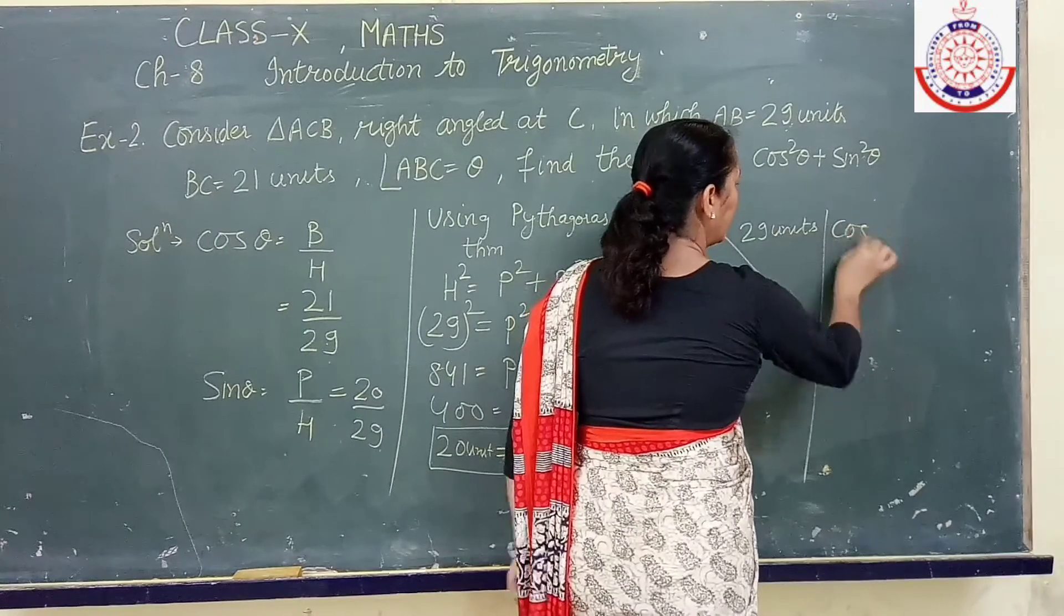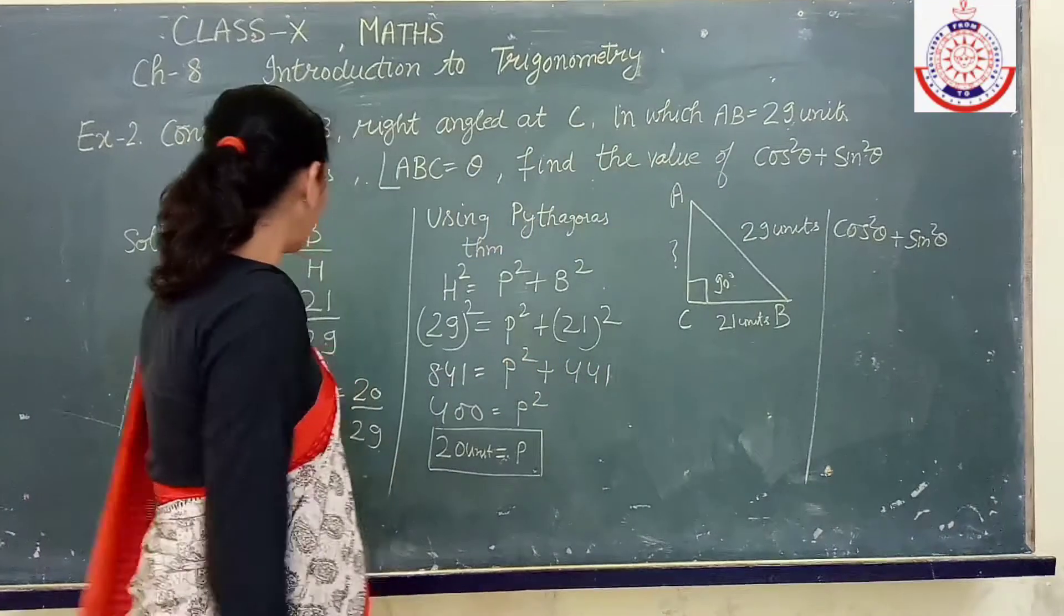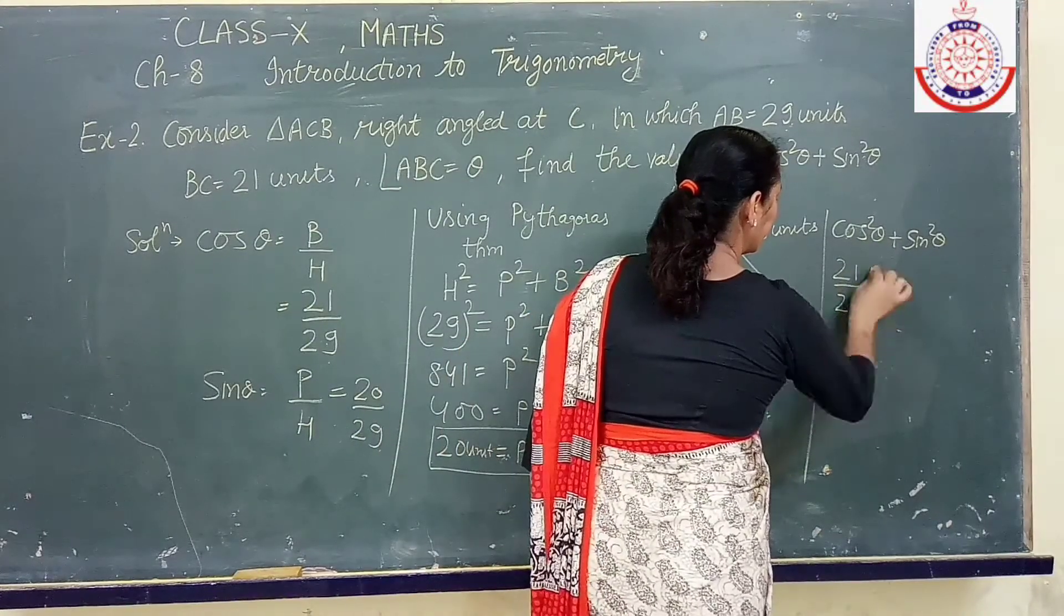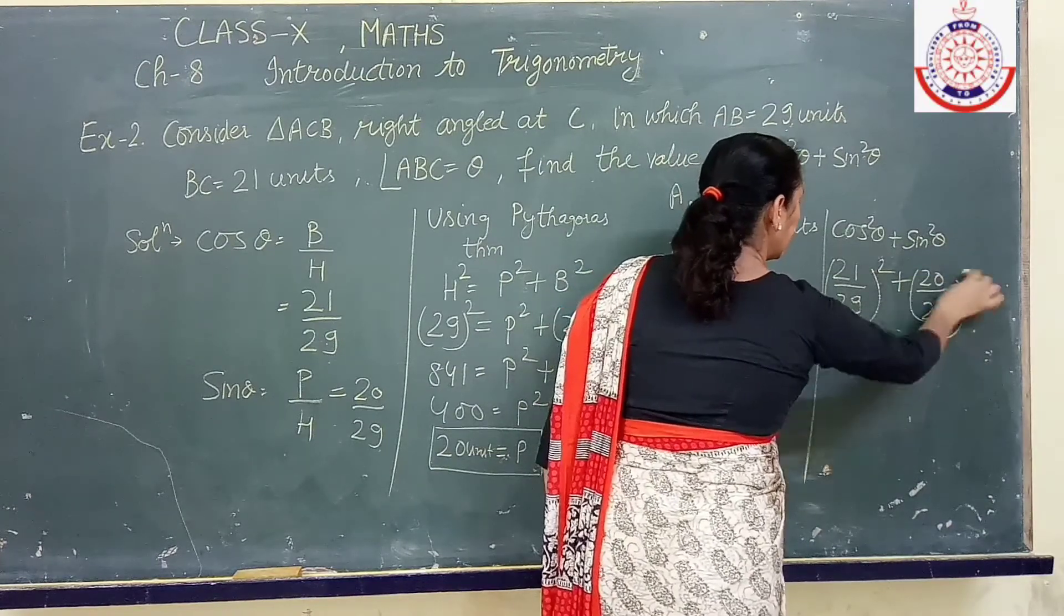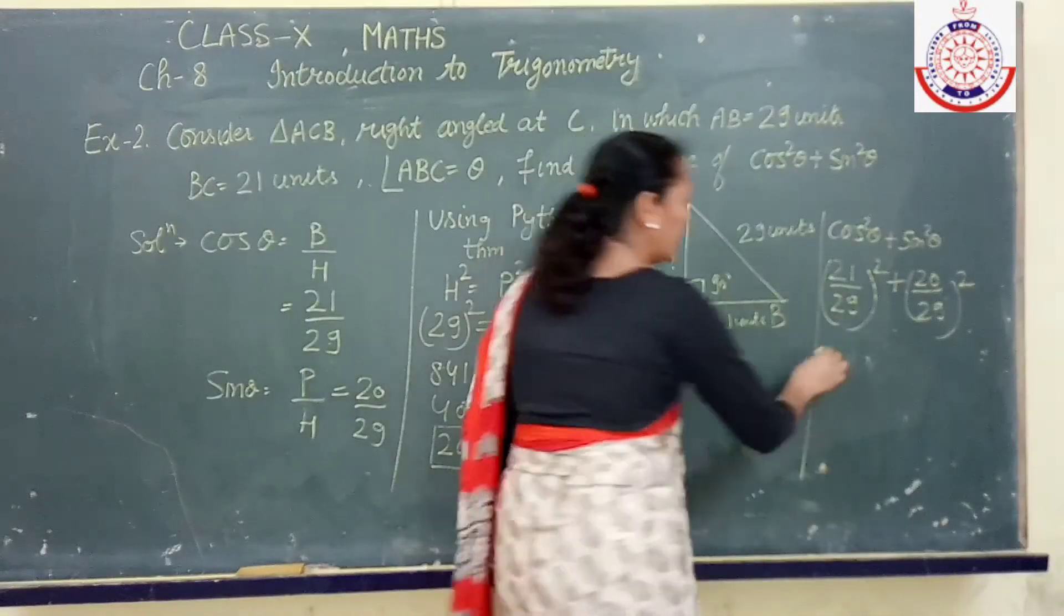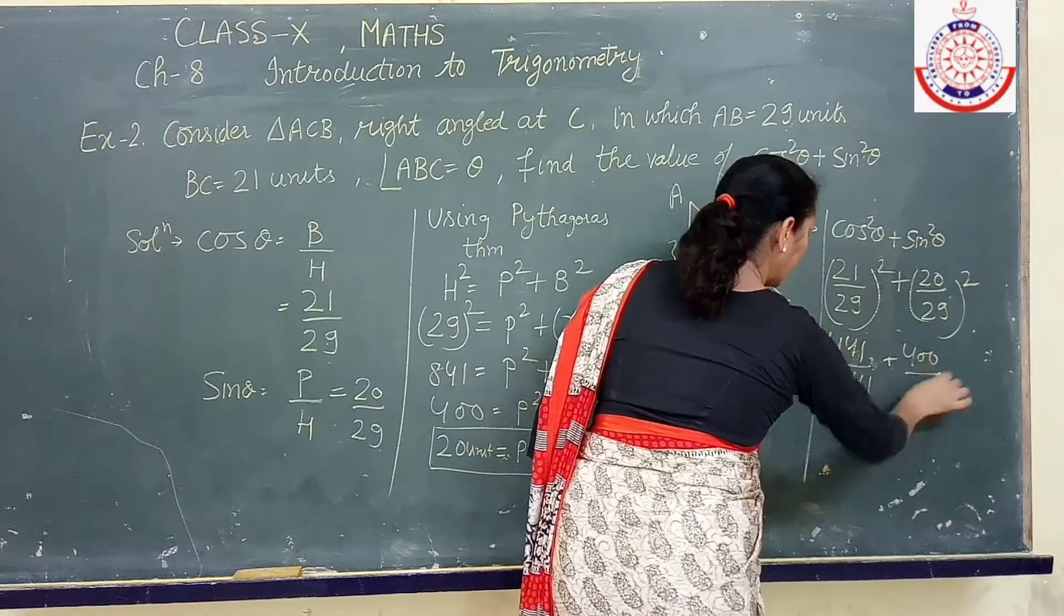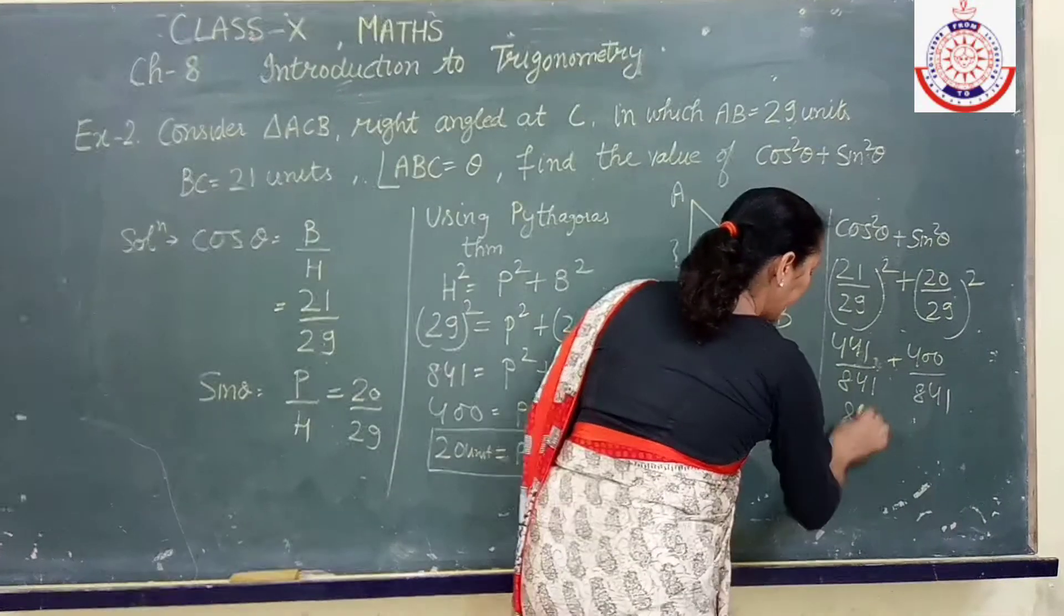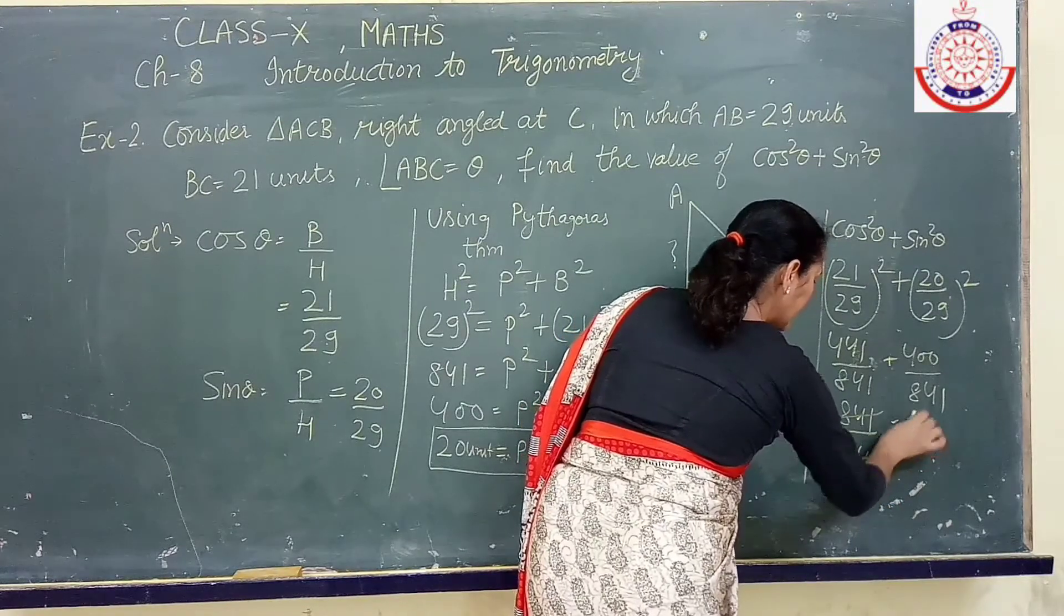Cos square theta plus sine square theta, put in the values. 21 upon 29 square and sine we have got 20 upon 29 square. According to question square was there so take square. 441 upon 841 then 400 upon 841, solving by LCM we get 841 upon 841 and after cancellation we get answer as 1.